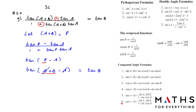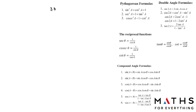The main thing in proving is to be able to identify which of the identities you can use while solving. We have finished proving from exercise 3c. Now we are going to start from 3d. This exercise has the most number of proving questions. We will start with question number 12a.